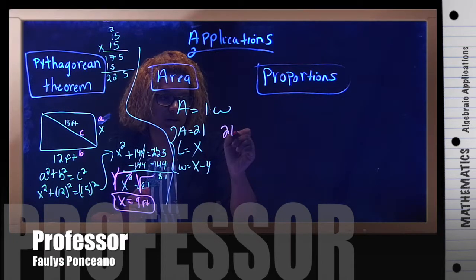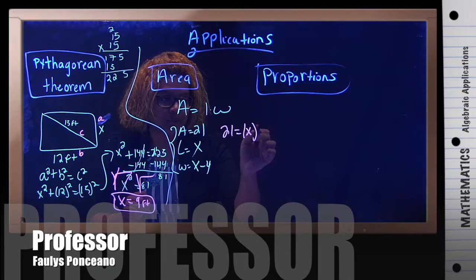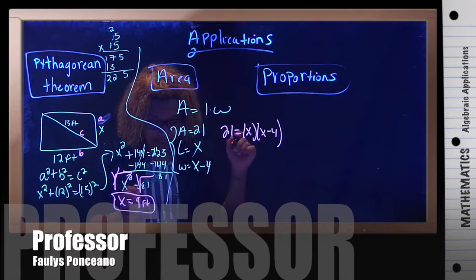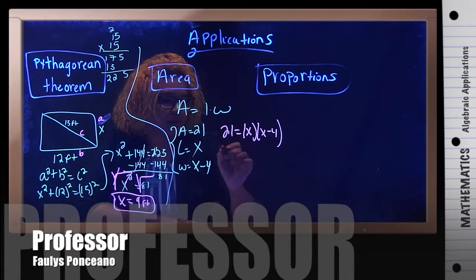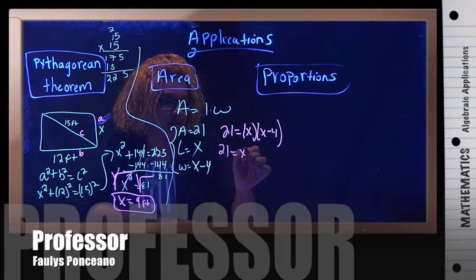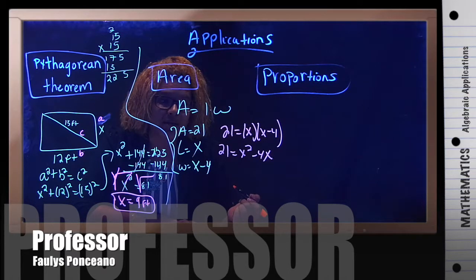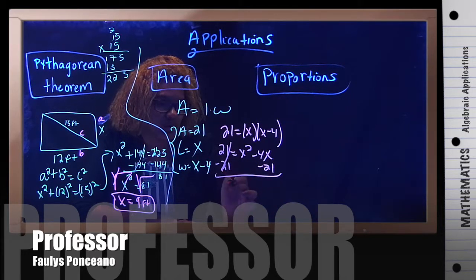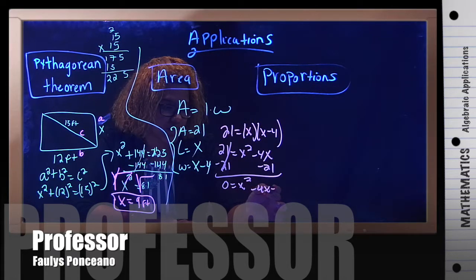So, A is 21. My length is, I don't know. And my width is x minus 4. I'm going to go ahead and multiply. So, I get 21 equals x squared minus 4x. Now, I do want to solve for x. So, I do want it to say equal to 0. So, I'm going to minus 21 on both sides.